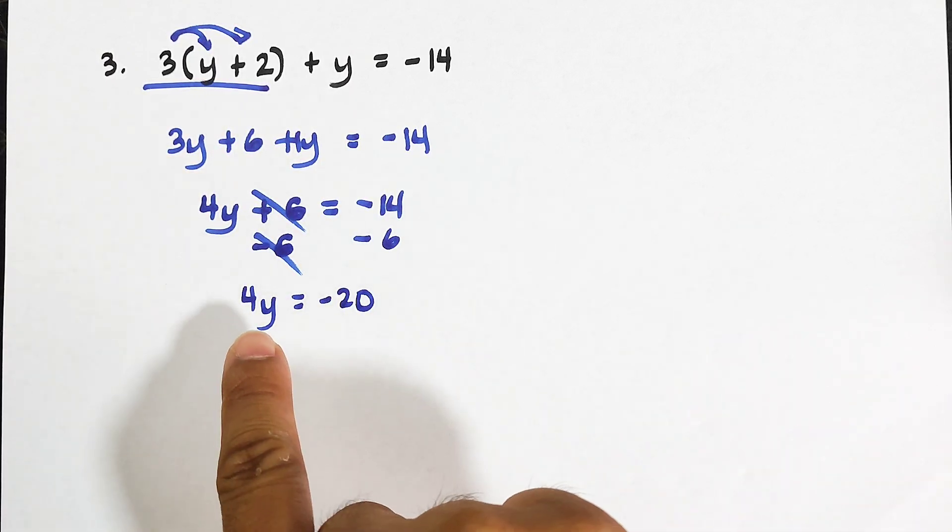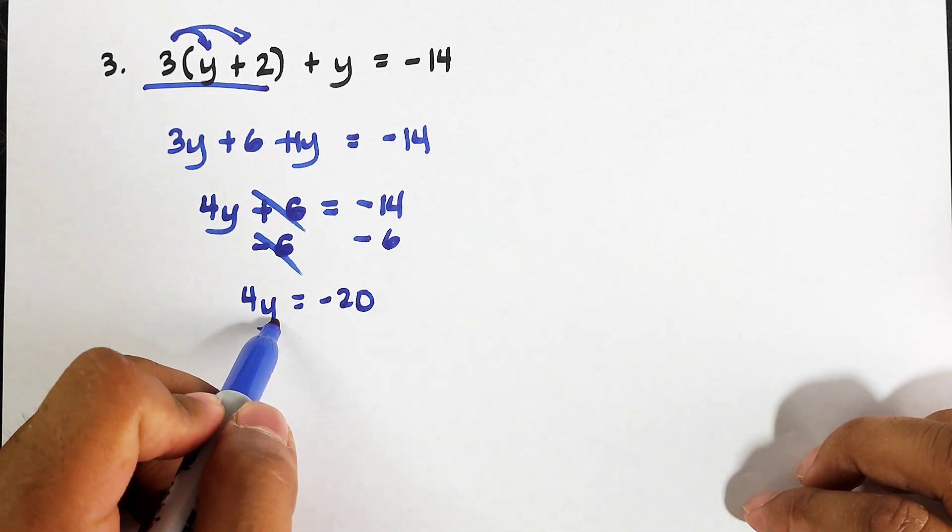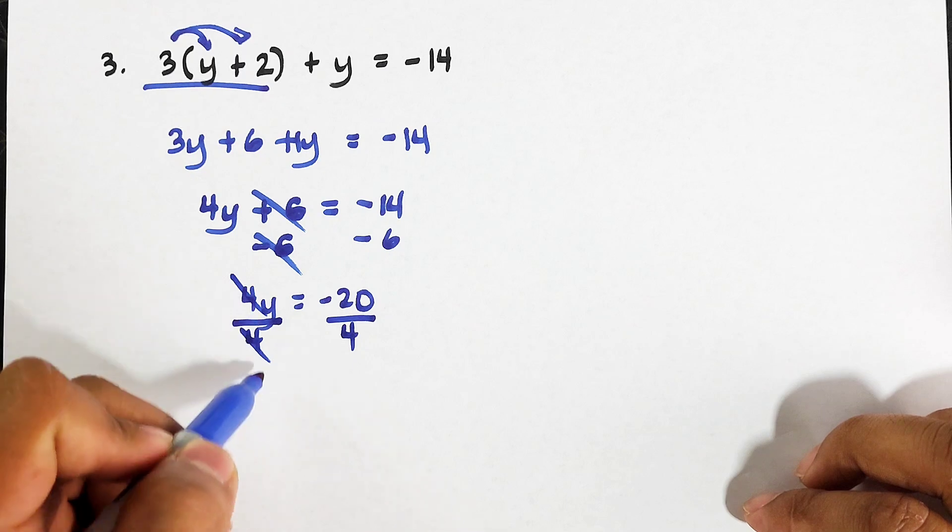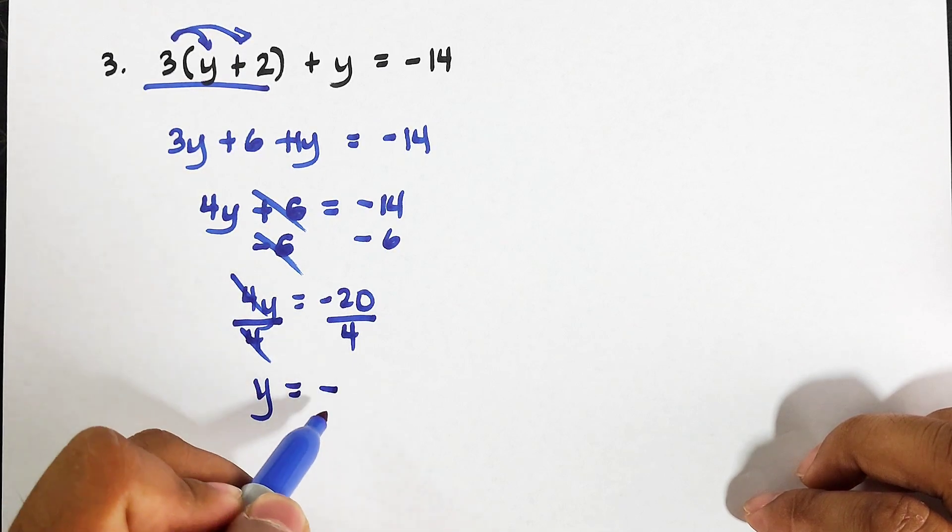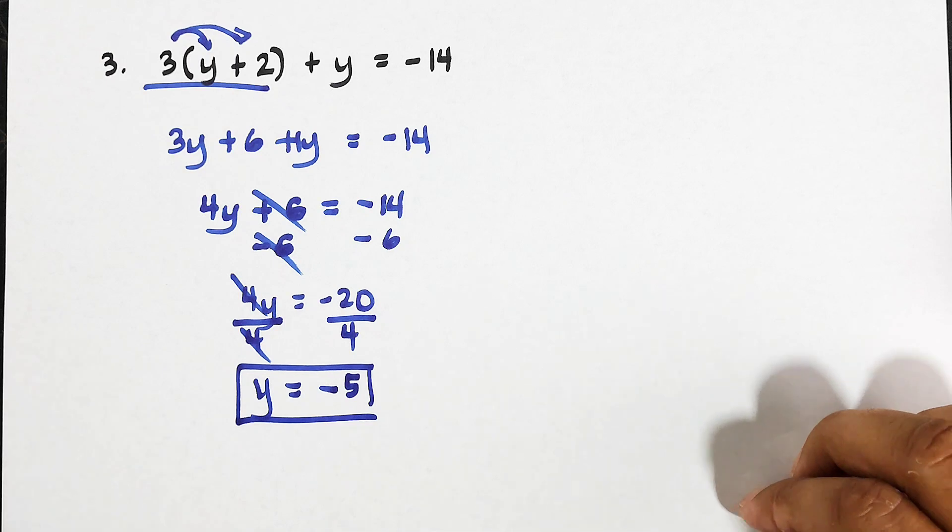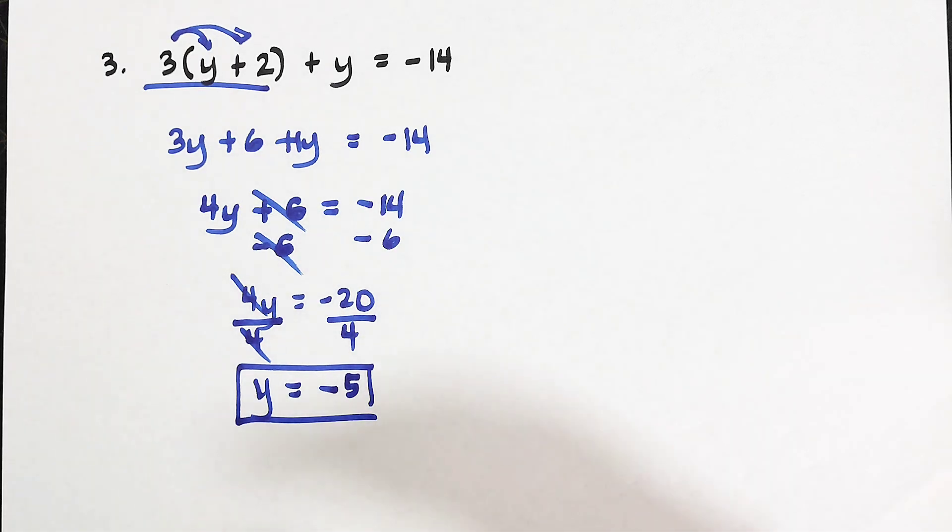So as you can see, the coefficient of y is 4. Divided by 4, divided by 4. Your y is definitely negative 5. And as you can see guys, as simple as that we solved this kind of difficult equation, but still we are done with the variable y.